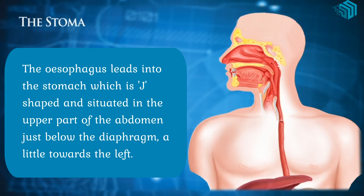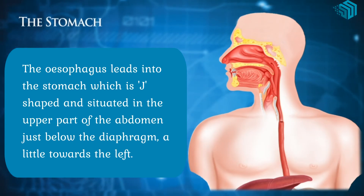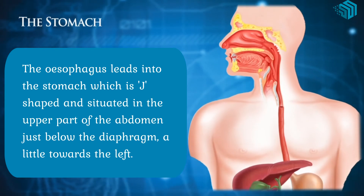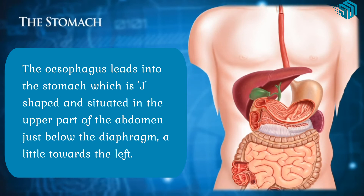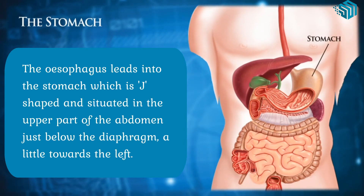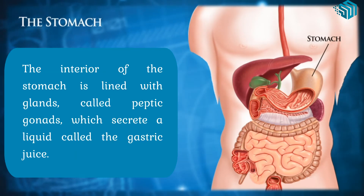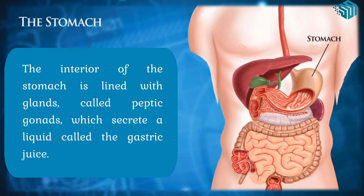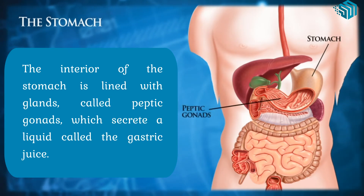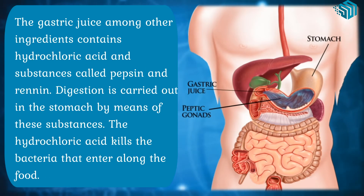The stomach. The esophagus leads into the stomach, which is J-shaped and situated in the upper part of the abdomen, just below the diaphragm, a little towards the left. The interior of the stomach is lined with glands called peptic glands, which secrete a liquid called the gastric juice. The gastric juice, among other ingredients, contains hydrochloric acid and substances called pepsin and rennin.